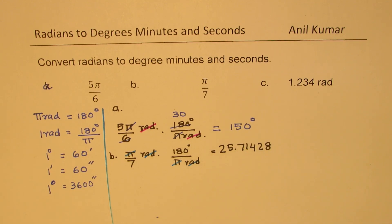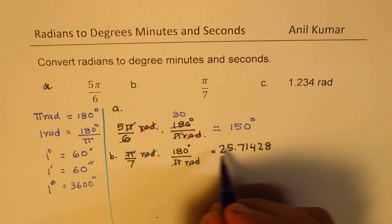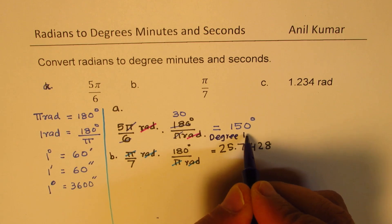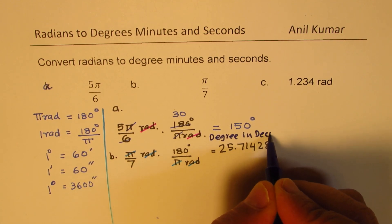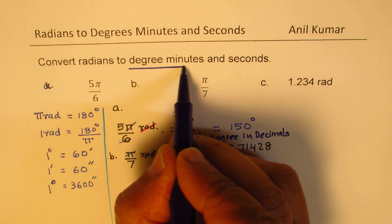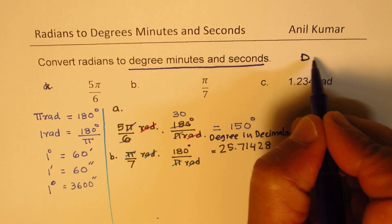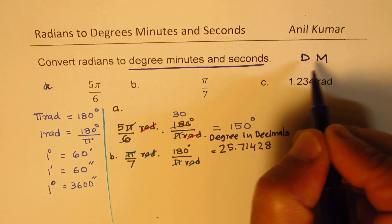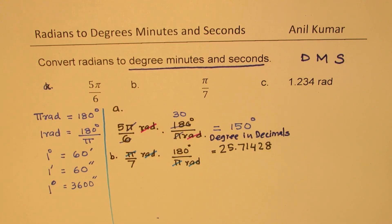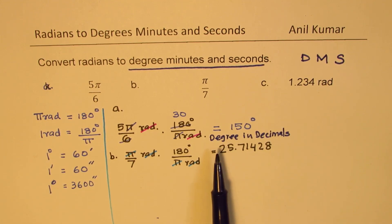What we got is a degree in decimals. The question is to write it in degrees, minutes, and seconds — DMS format. We have 25 whole degrees, and the decimal part is 0.71428. We need to convert that decimal portion into minutes and seconds.